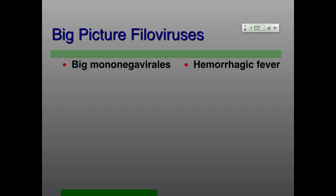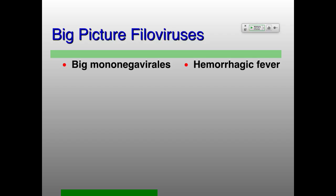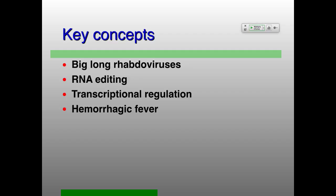Big picture with the filoviruses: they're big mononegavirales and, of course, they cause hemorrhagic fever, which is why lots of people get interested in them. A couple of key concepts: RNA editing — it turns out the RNA editing is extremely similar to what happens in the paramyxo and rhabdoviruses. The only really major difference in terms of their regulation has to do with transcriptional regulation — more accurately, messenger RNA production regulation — and then, of course, the hemorrhagic fever itself.